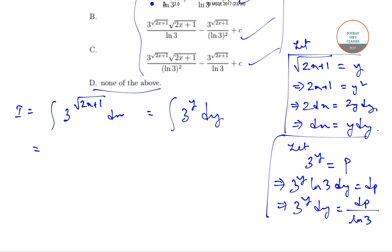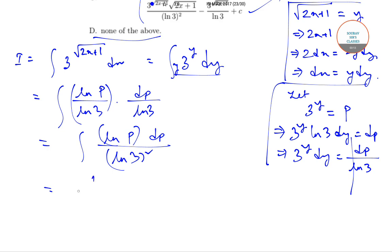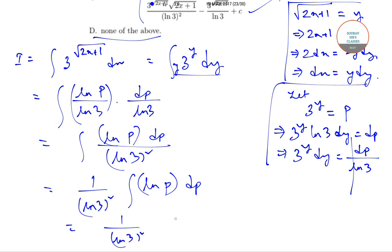After substitution, the integral becomes y · dy expressed in terms of p. Since y = ln(p) / ln3 and 3^y dy = dp / ln3, the integral reduces to ∫ ln(p) · dp / (ln3)². Taking 1/(ln3)² outside, we integrate ln(p) dp, which equals p·ln(p) minus p.